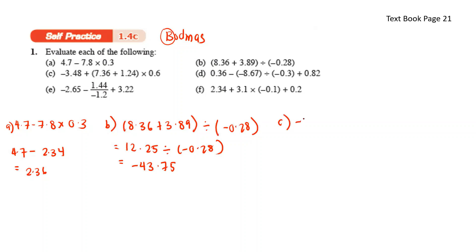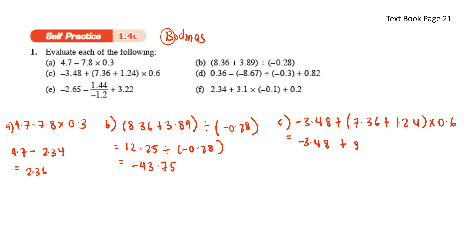For C: negative 3.48 plus (7.36 plus 1.24) times 0.6. We do the bracket first: 7.36 plus 1.24 gives 8.6. Then 8.6 times 0.6 gives 5.16. So negative 3.48 plus 5.16 gives us 1.68.